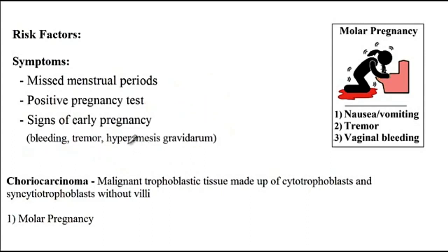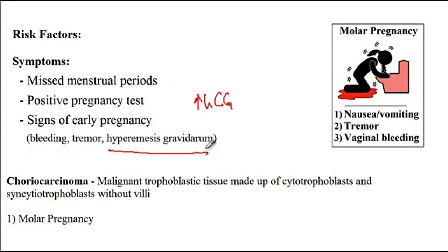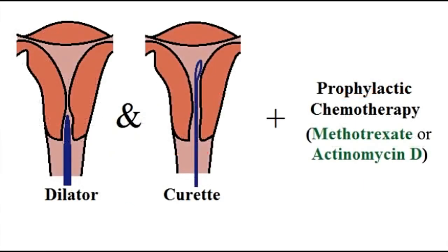Finally, patients with molar pregnancy, due to the high level of human chorionic gonadotropin, can present with hyperemesis gravidarum, where there is persistent nausea and vomiting. As for the treatment, patients with molar pregnancy undergo dilation and curettage, and those with a complete mole are recommended to undergo prophylactic chemotherapy with either methotrexate or actinomycin D to prevent further development of choriocarcinoma.